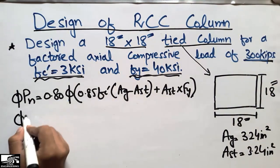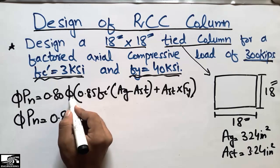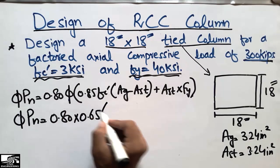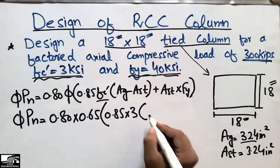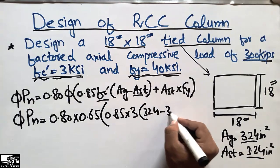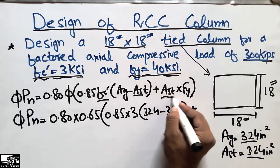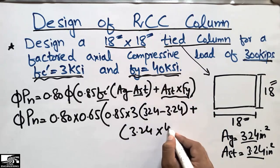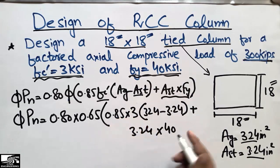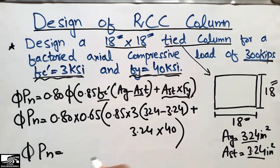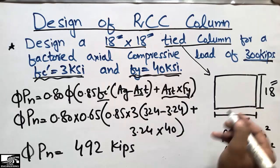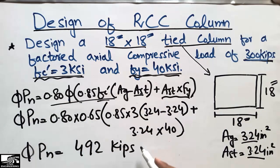Substituting all values: φPn = 0.80 × 0.65 × [0.85 × 3 × (324 − 3.24) + 3.24 × 40]. After calculating, φPn comes out to be 492 kips. This is the design strength of the tied concrete column.